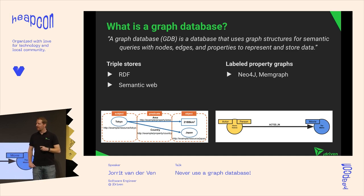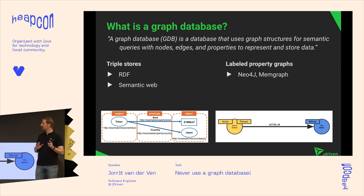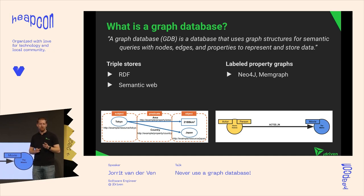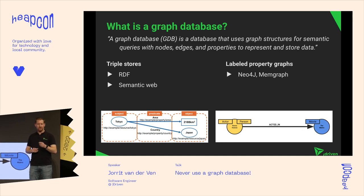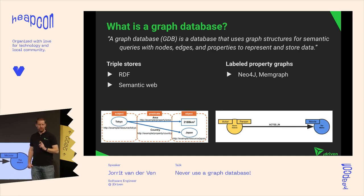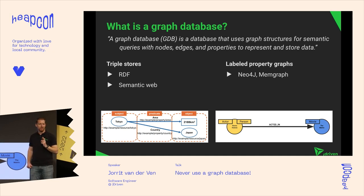There are actually two kinds of graph databases: triple stores and labeled property graphs. If you've ever worked with the semantic web, you came across triple stores and RDF — they tend to be a bit academic and hard to use. For example, to store one thing in a triple database you have to create a subject, a predicate, and an object — so for example "the sky is blue." Labeled property graphs, which is mostly what I'll talk about today, are a lot simpler, tend to be faster, and give you fewer headaches.